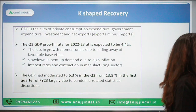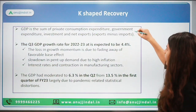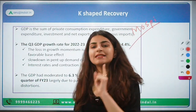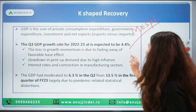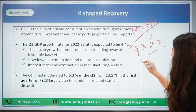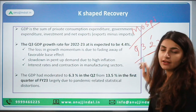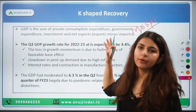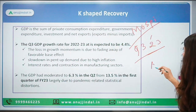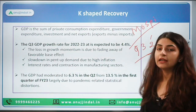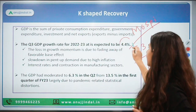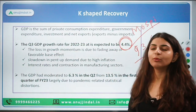MoSPI — the Ministry of Statistics and Programme Implementation — has brought out second advance estimates for Quarter 3 of this financial year, FY 2022-23. So Q3, the December quarter, its data has been brought out by MoSPI, and the growth expected this time is 4.4 percent.